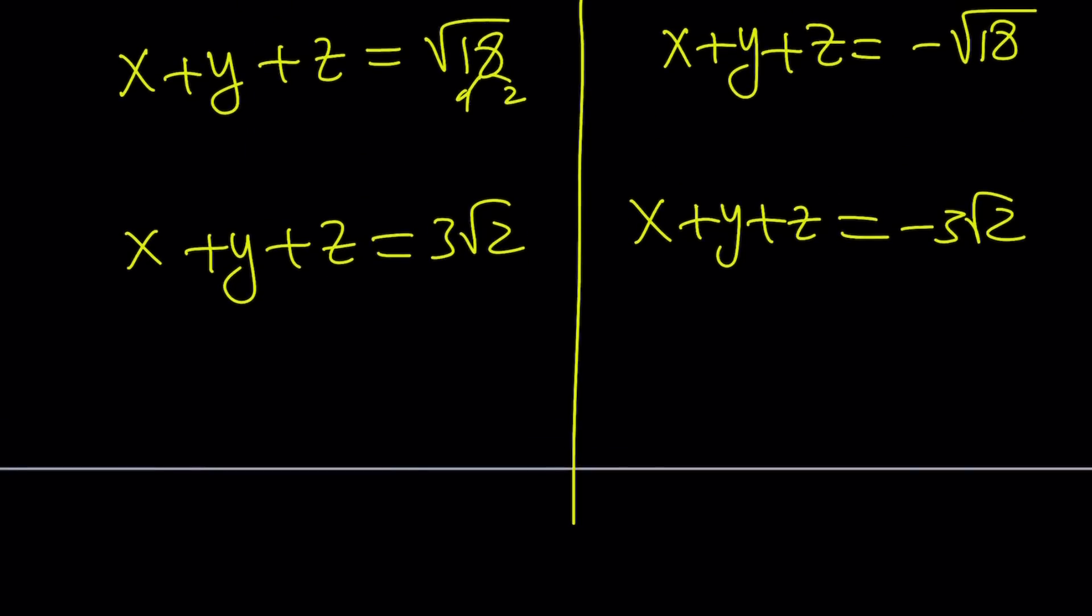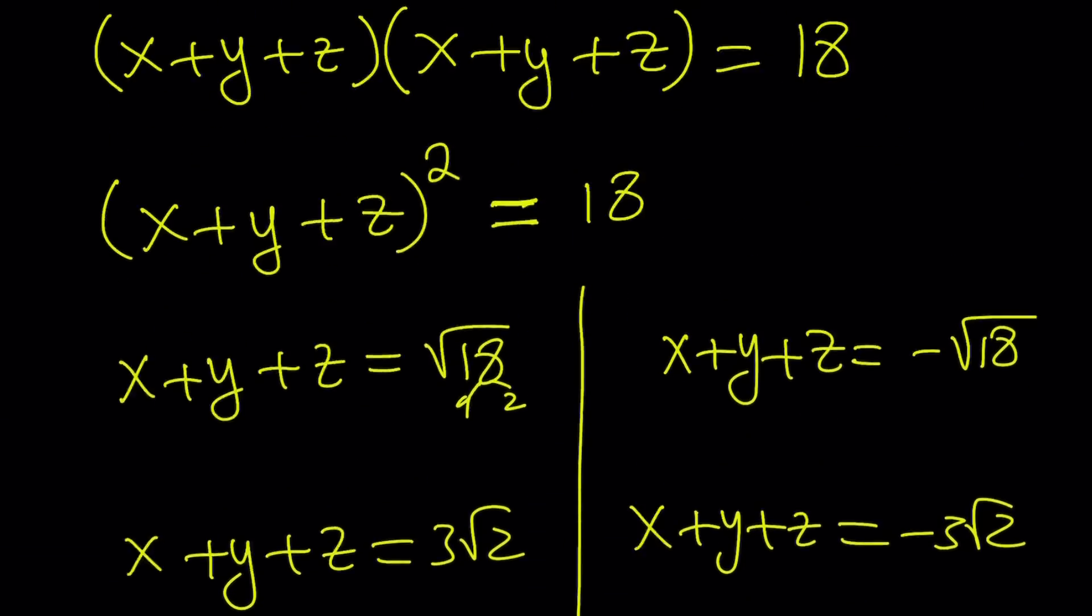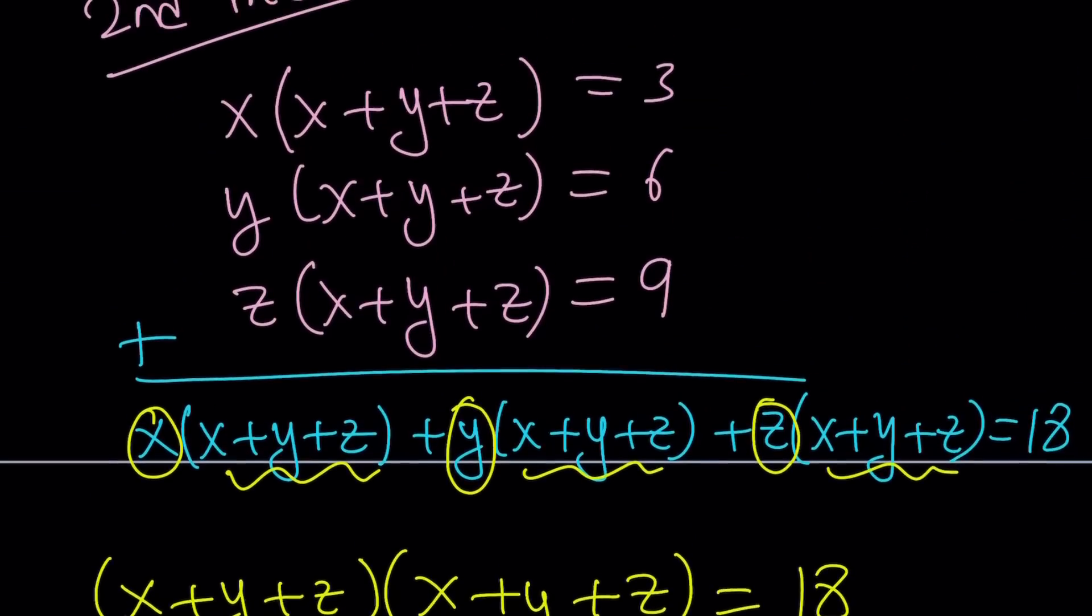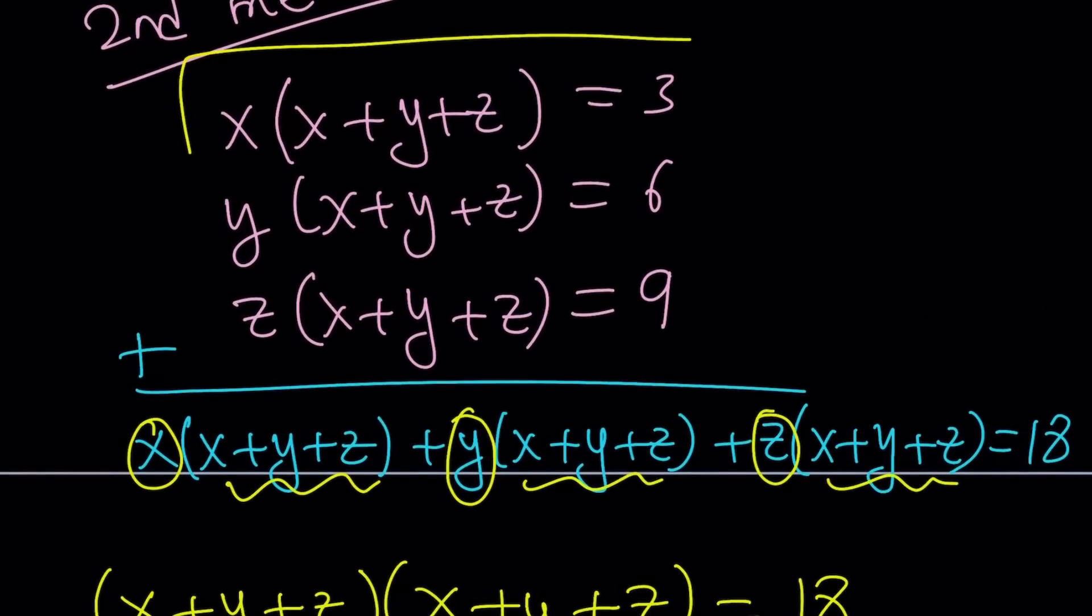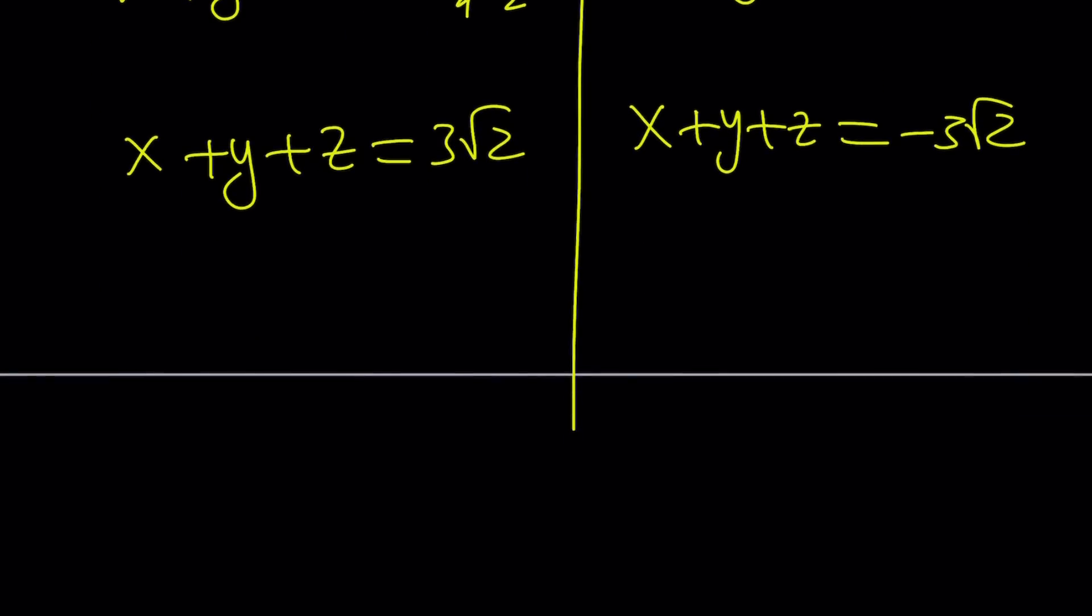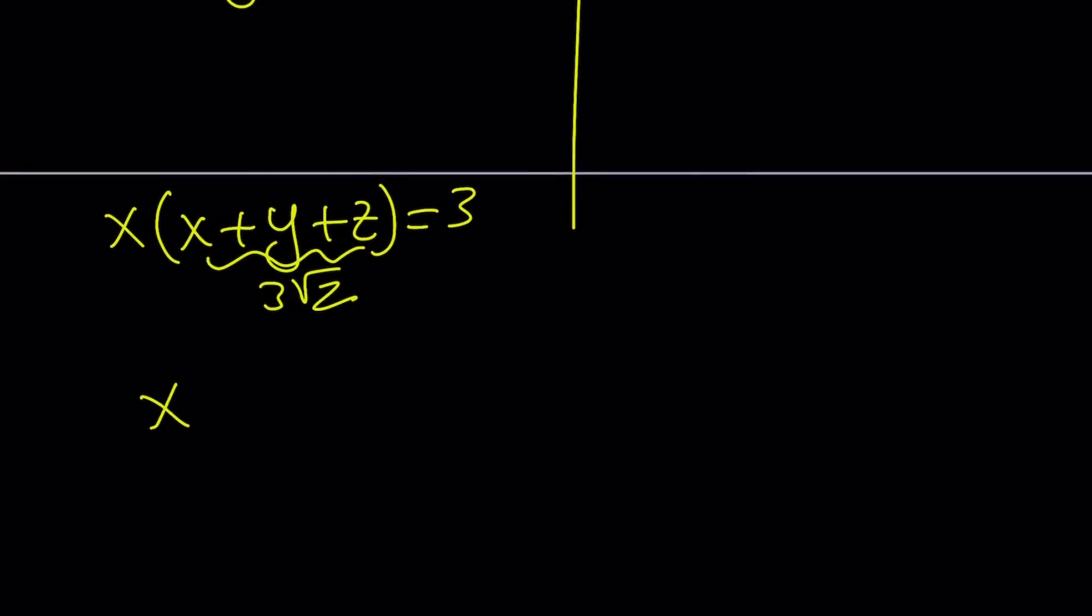So, how do you find x, y, z from here, though? I just found their sum. But remember the original problem. It gave us something like this. x times x plus y plus z. So, if you consider that, x times x plus y plus z is equal to 3. And I know that this is equal to 3 root 2, so x is just going to be from here, 3 divided by 3 root 2, or 1 over root 2, or root 2 over 2. You get the x value.